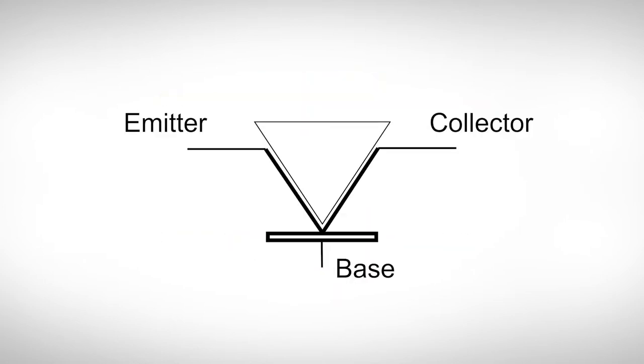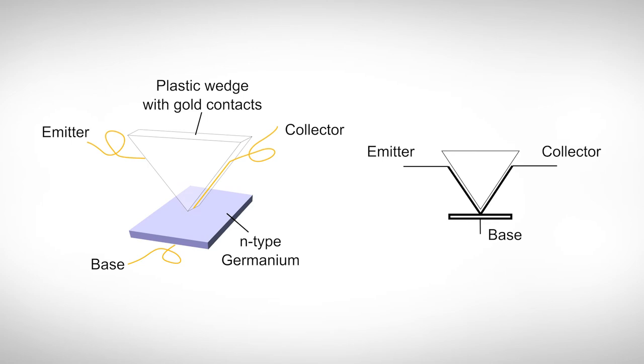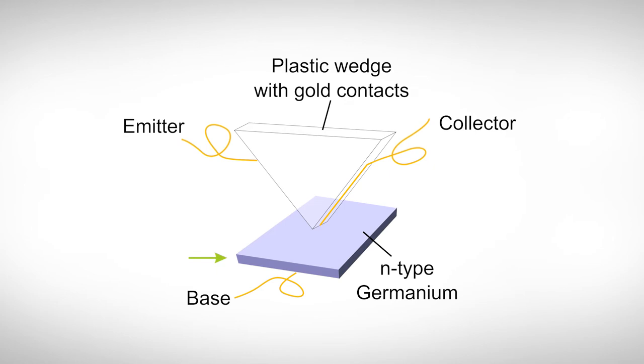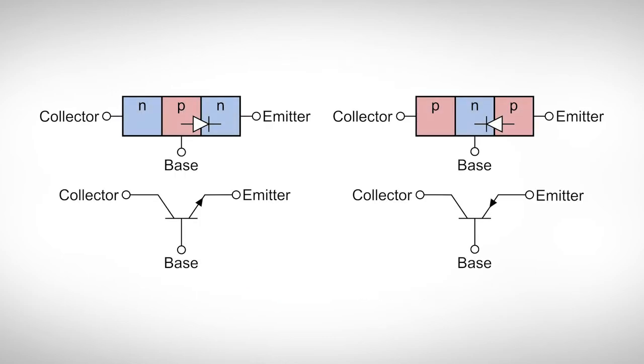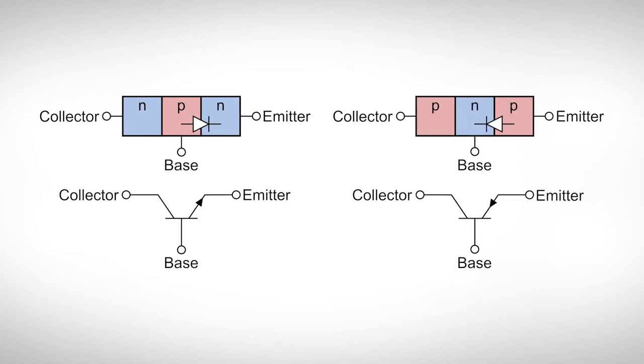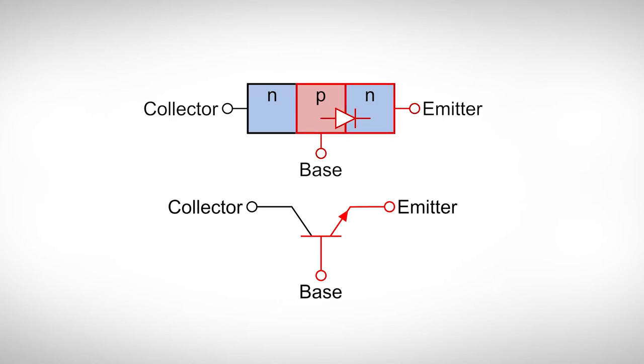The symbol of a bipolar transistor depicts the side view of the first experimental setup. It consisted of a slab of semiconducting material as the base. The contacts for collector and emitter are on either side of a plastic wedge, which presses down on the semiconductor. To distinguish between an NPN and a PNP transistor, the symbol shows a small arrow between base and emitter. The direction of this arrow gives the polarity of the base emitter diode.